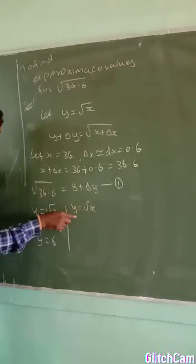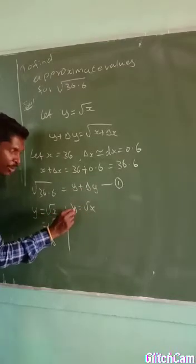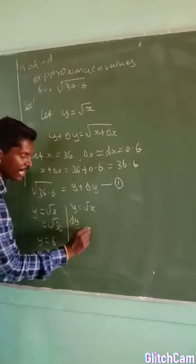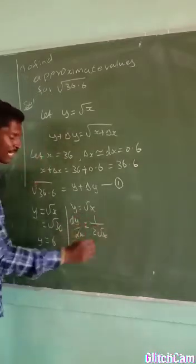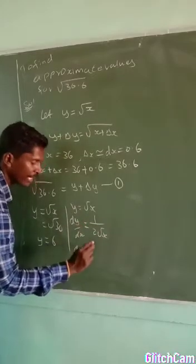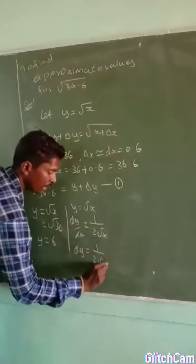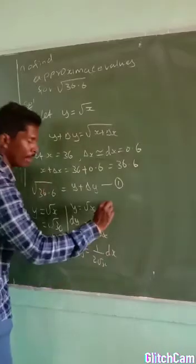Next I want my delta y. So I differentiate y with respect to x. The derivative of y with respect to x becomes dy by dx. Differentiating root x, it becomes 1 by 2 root x. Then multiply dy equals 1 by 2 root x into dx.